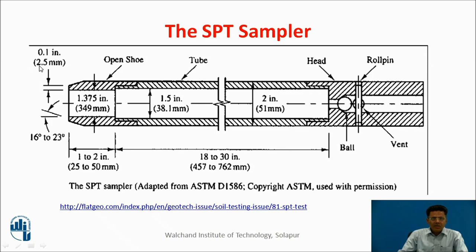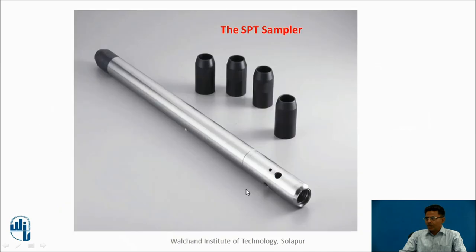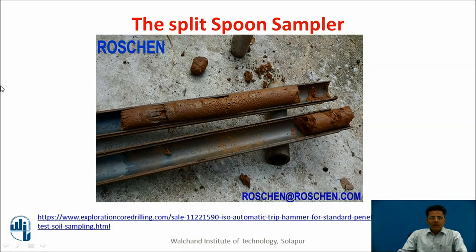Taking a section of the SPT sampler, we can see the open shoe, the tube, the roll pin, and the head. When assembled, the SPT sampler has a lower part and an upper part. When we open this split spoon sampler, we are able to see the sample collected during the SPT.